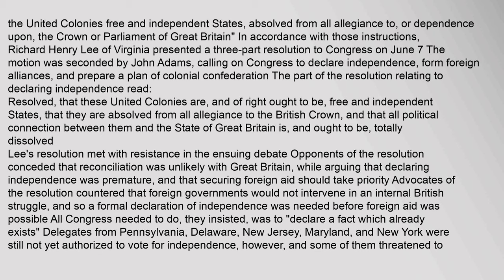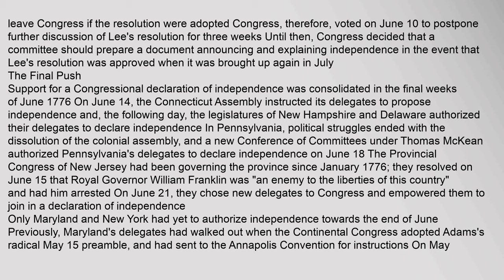Advocates of the resolution countered that foreign governments would not intervene in an internal British struggle, and so a formal declaration of independence was needed before foreign aid was possible. All Congress needed to do, they insisted, was to declare a fact which already exists. Delegates from Pennsylvania, Delaware, New Jersey, Maryland, and New York were still not yet authorized to vote for independence, and some of them threatened to leave Congress if the resolution were adopted. Congress voted on June 10 to postpone further discussion of Lee's resolution for three weeks. Until then, Congress decided that a committee should prepare a document announcing and explaining independence in the event that Lee's resolution was approved when it was brought up again in July.